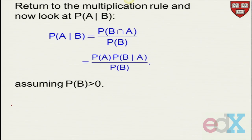All right. So let's return to the multiplication rule, and let's look at the probability of A given B. The rule said that this is the probability of B given A and A divided by the probability of B. Once again, I'm assuming that P of B is greater than 0.